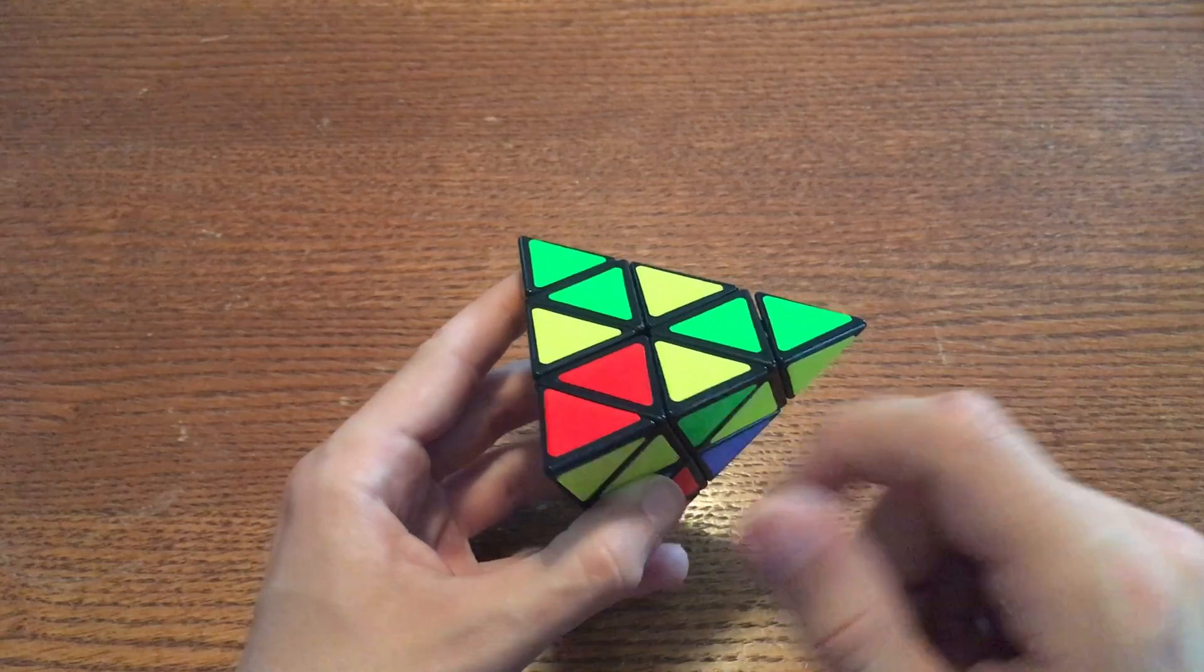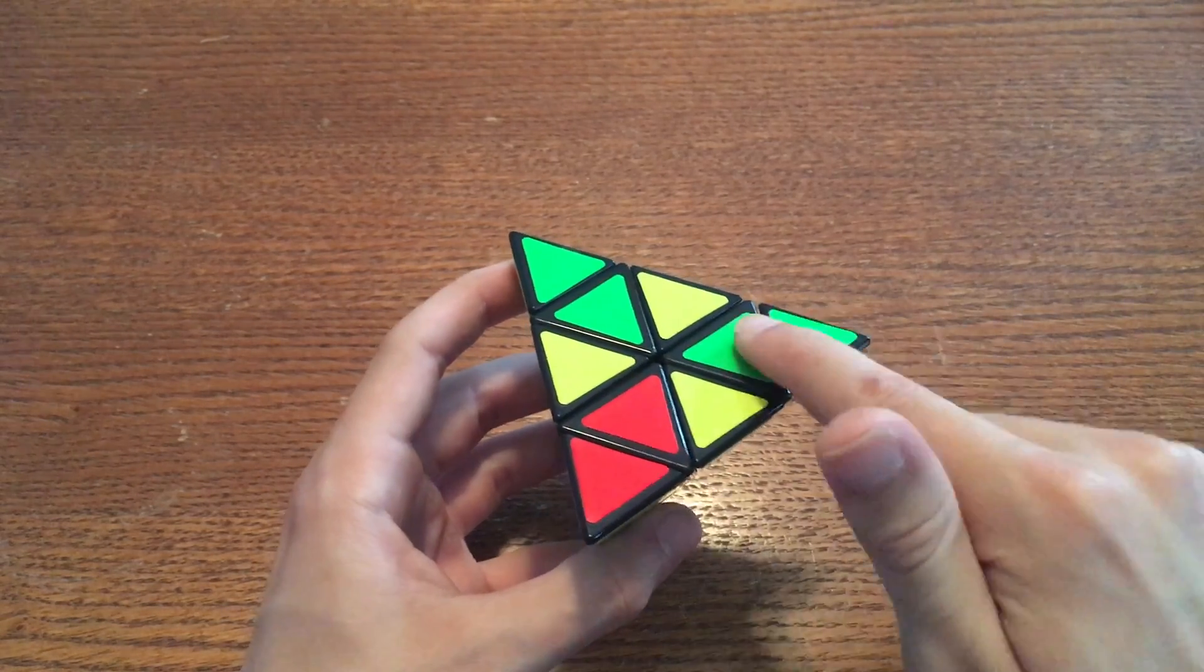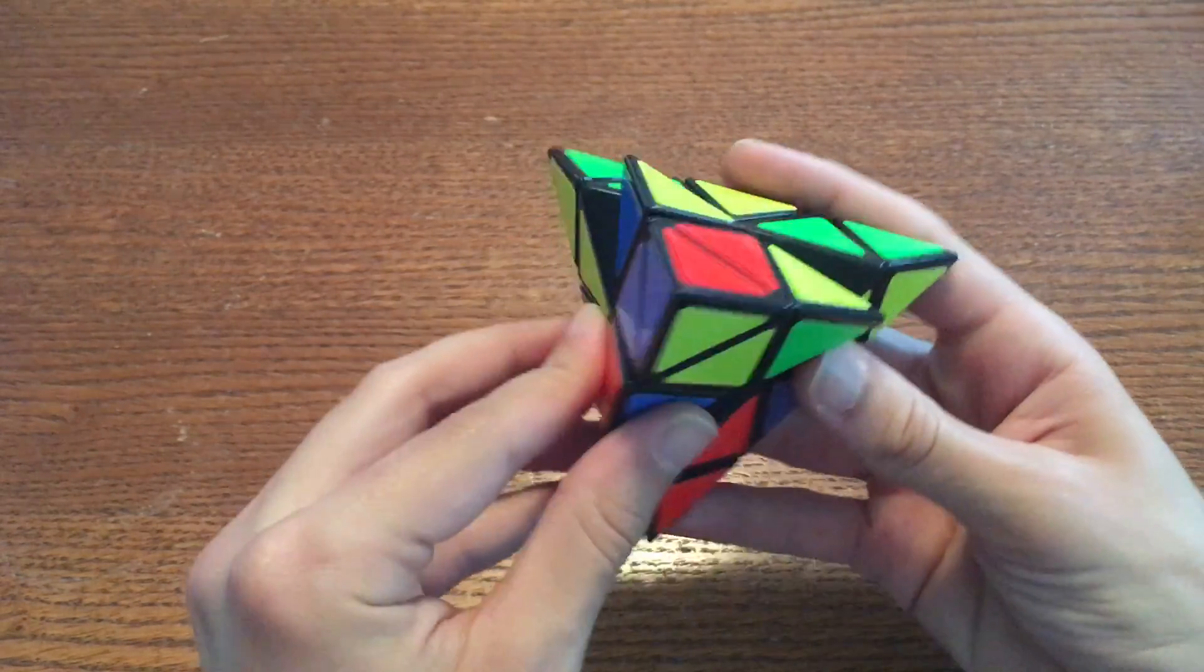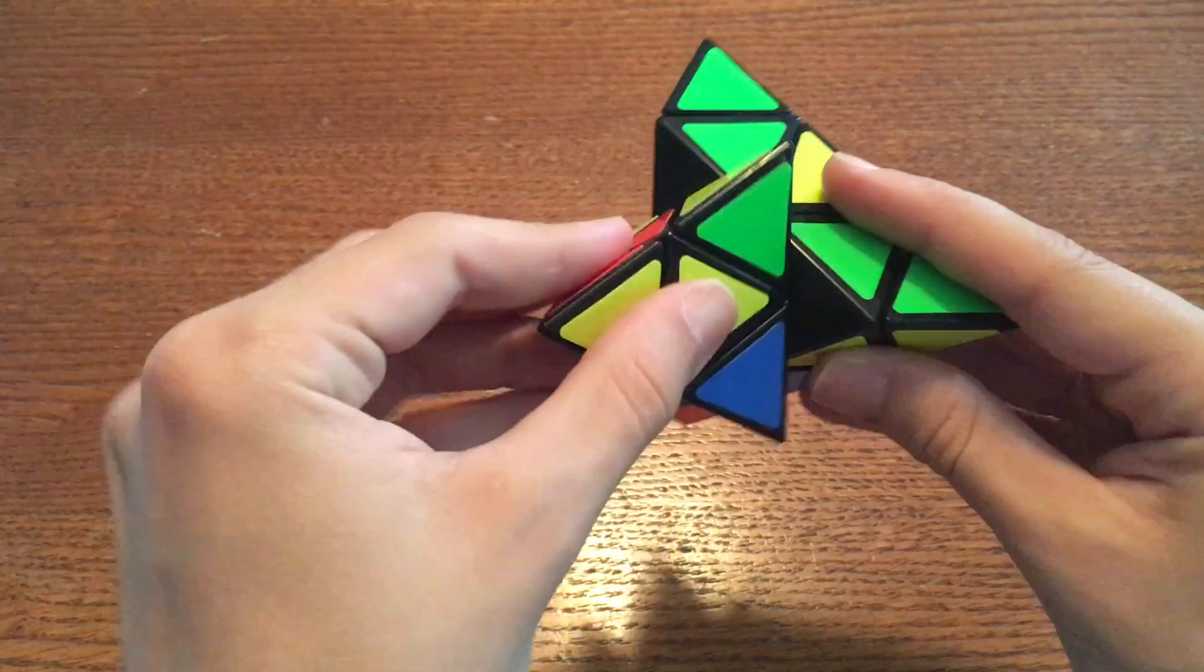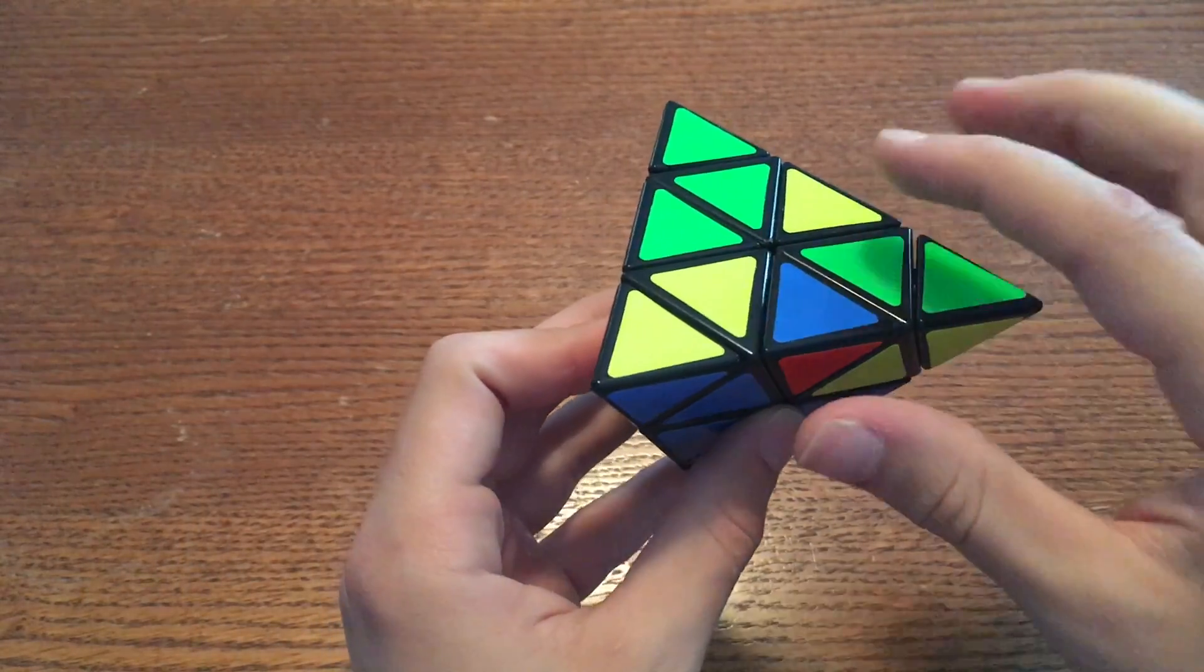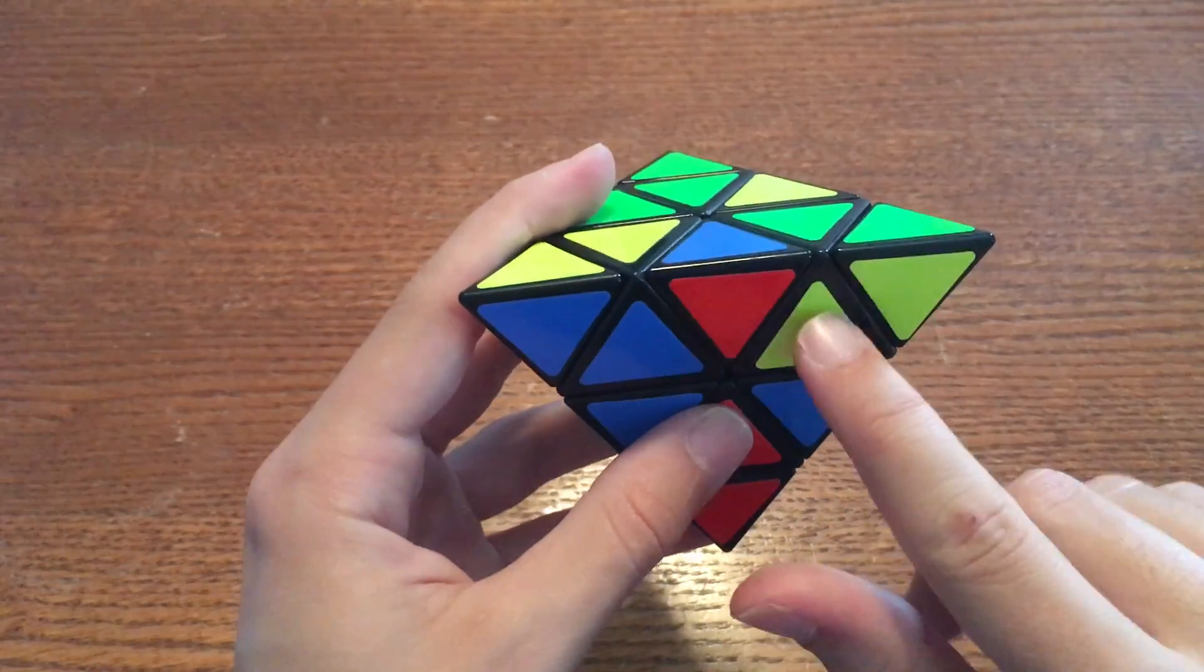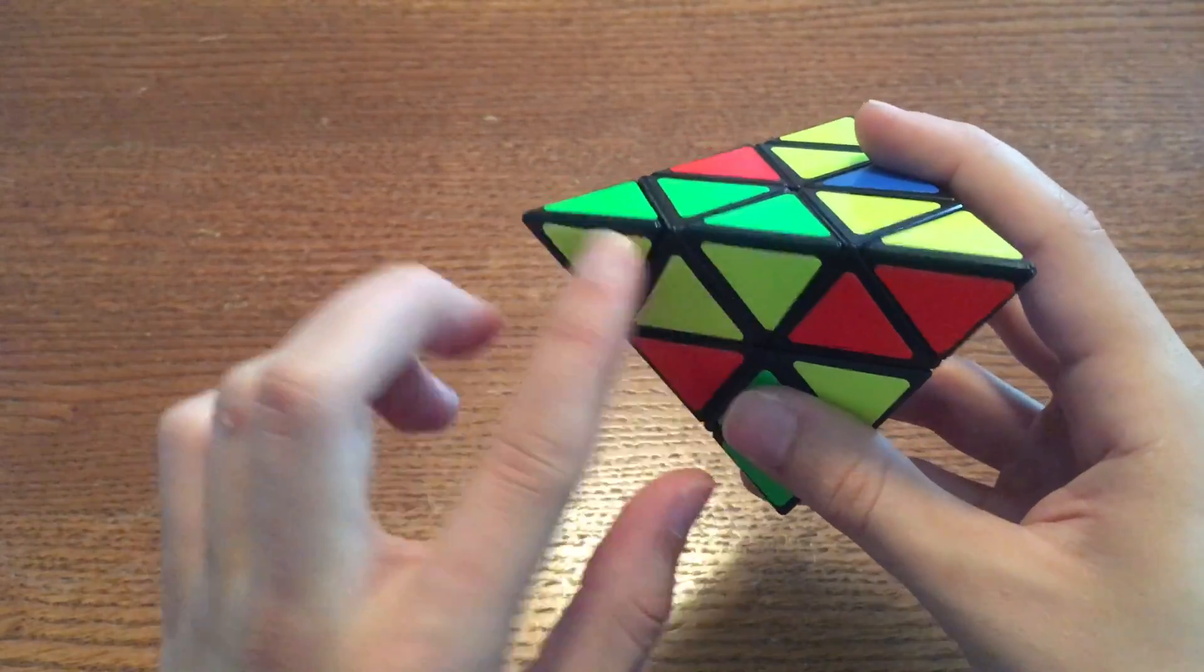We need to rotate each of these three yellow corners along with their centers so that all three yellow centers are showing on this face. So if we take this corner and its center and rotate it up like that we've got one yellow center on this face. Here's the second one and here's the last one.